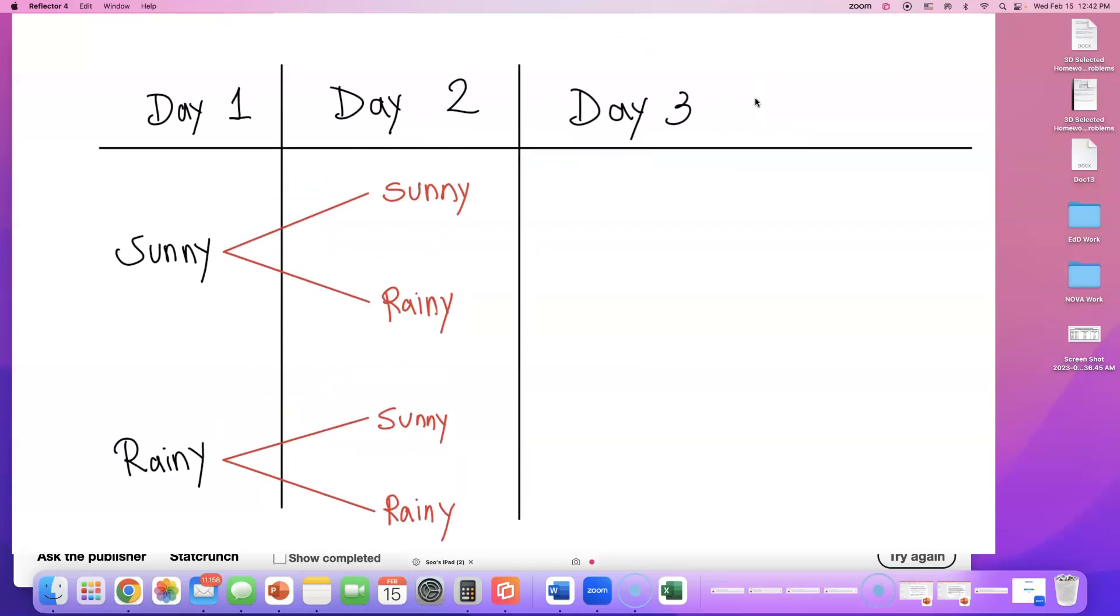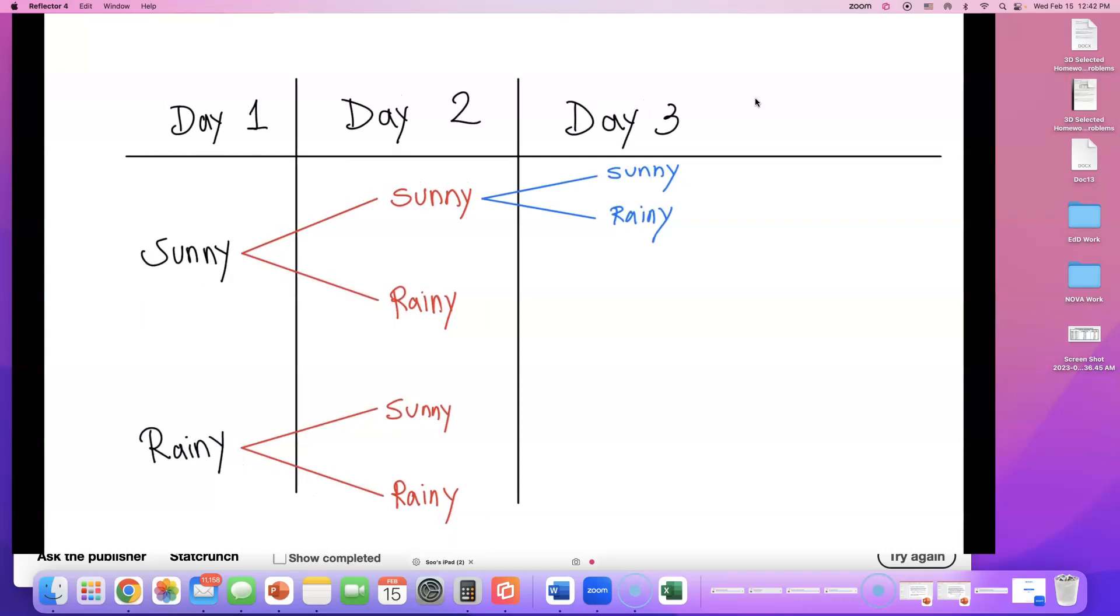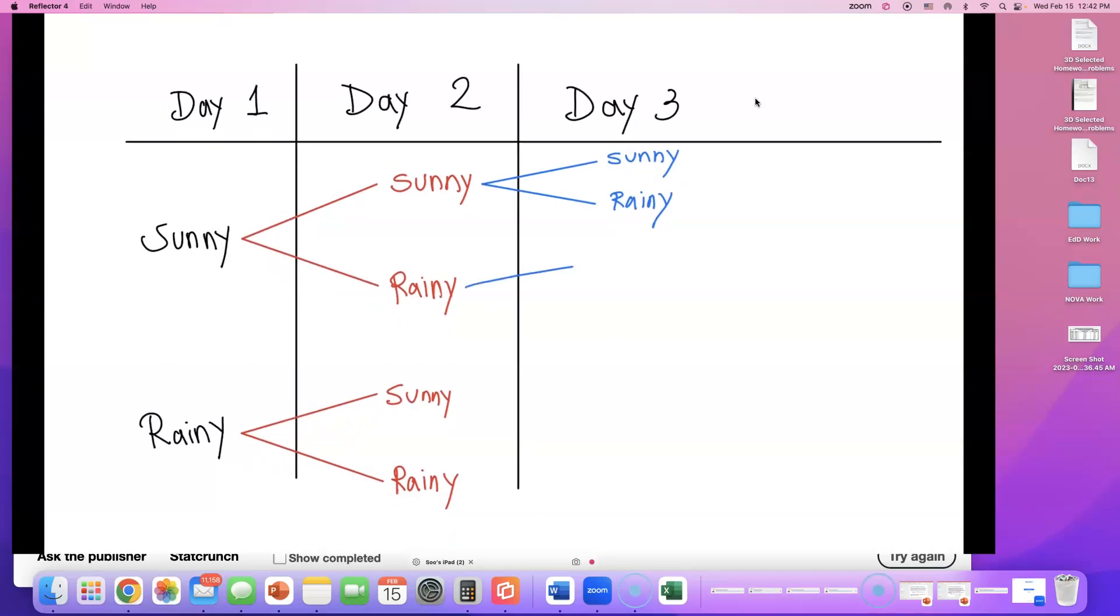I could have sunny, sunny, sunny day, like super wonderful trip. Or sunny, sunny, rainy day. I'm doing that same thing for the other branches. I could have sunny, rainy, sunny day. And I could have sunny, rainy, rainy day.